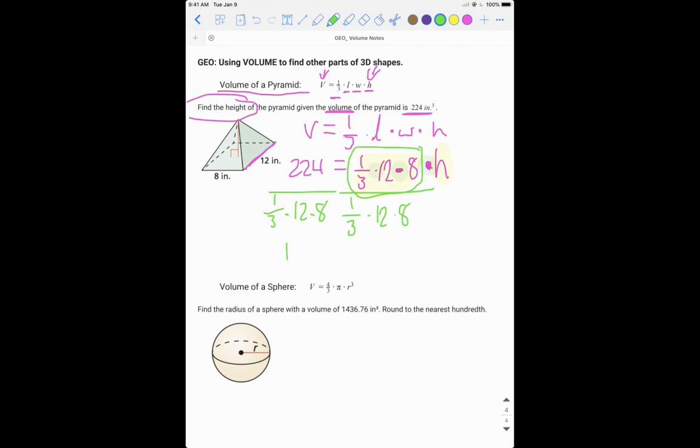And that gets us to H equals 224 divided by, make sure it's helpful if you put this part in parentheses, one third times 12 times eight. And if you plug that into your calculator, you get 7.000 approximately. So our height is about seven inches. All right, so all we had to do is try to cancel this stuff out to get H by itself. And so we're going to apply the same idea of getting that variable that we want to solve for by itself in this next example.